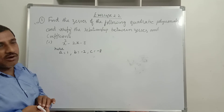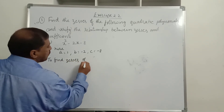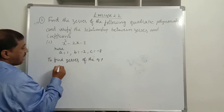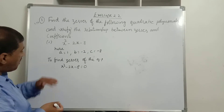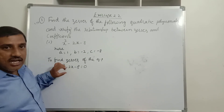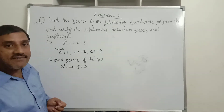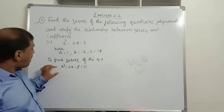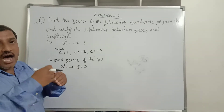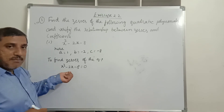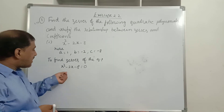To find the zeros, set p(x) = 0: x² − 2x − 8 = 0. Solve by splitting the middle term. The middle term is −2x. We need to find factors of A×C = 1×(−8) = −8 whose sum equals −2. The factor pairs of −8 are: (1, −8), (−1, 8), (2, −4), (−2, 4).